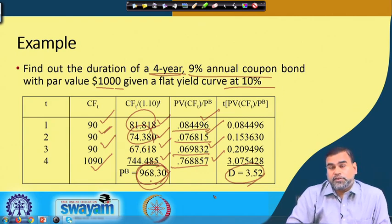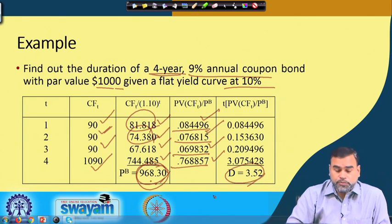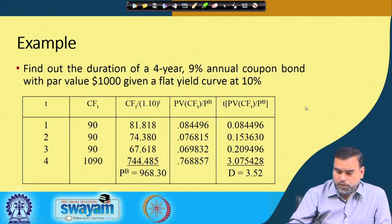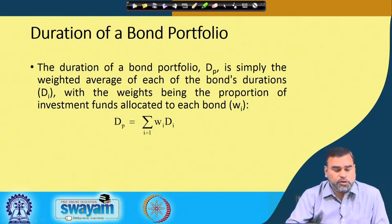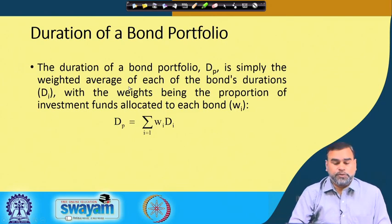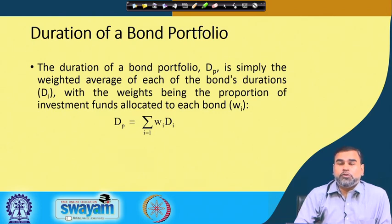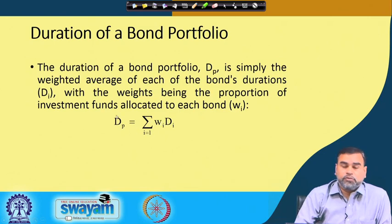The use of duration is to minimize interest rate risk. You should hold a bond up to the point where your horizon period matches the duration, not the term to maturity — that is the investment strategy we always adopt. If your horizon period is 3.5 years, do not invest in a bond whose term to maturity is 3.5 years; invest in a bond whose duration is 3.5 years — by that, your interest rate risk can be minimized. The duration of a portfolio is simply the weighted average of each bond's duration, with weights giving the proportion of investment allocated to each bond.